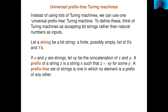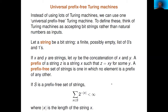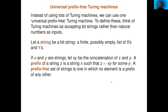We think of sticking a bit string into a Turing machine and having it spit out a natural number as output. If you've got two strings x and y, you can concatenate them to make xy. A prefix of some string z is a string x that comes at the start of z, so that z is x followed by some other string y. A prefix-free set of strings is a set in which no element is a prefix of any other.